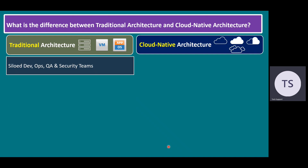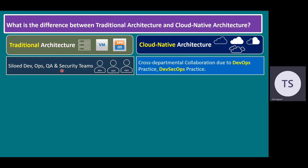Another point is that traditional architecture is siloed — meaning separated. The development team works independently, the operations team works separately, and even the quality assurance team and security team all work individually. But when it comes to cloud-native architecture, this is completely changed: all are working in cross-departmental collaboration — teamwork — due to DevOps practice and DevSecOps practice, with all teams working together.